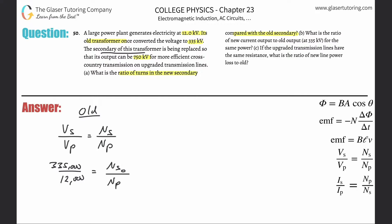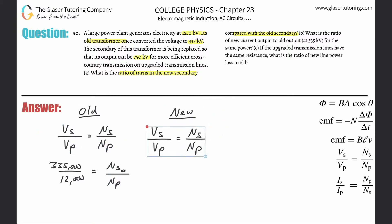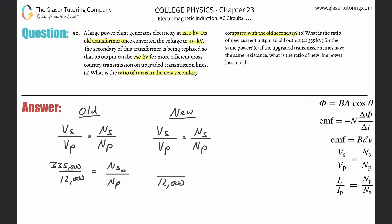The primary coil is not being changed — the problem says the secondary is being replaced — so the primary turns stay constant. Now for the new transformer, we use the same formula. The primary voltage is still 12,000 volts, since that's what the power plant generates. The new secondary voltage is 750 kilovolts, so 750,000 volts, equal to the new secondary turns divided by the primary turns.